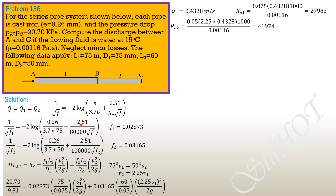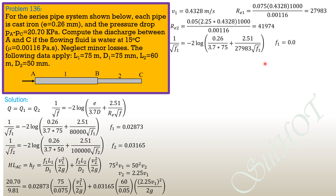Substituting back into the Colebrook equation: 1 over square root of F1 equals negative 2 log of (0.26 over 3.7 times 75) plus (2.51 over 27,983 times square root of F1). The new friction factor F1 equals 0.03116, which is appreciably different from the preceding value, so we refine further.